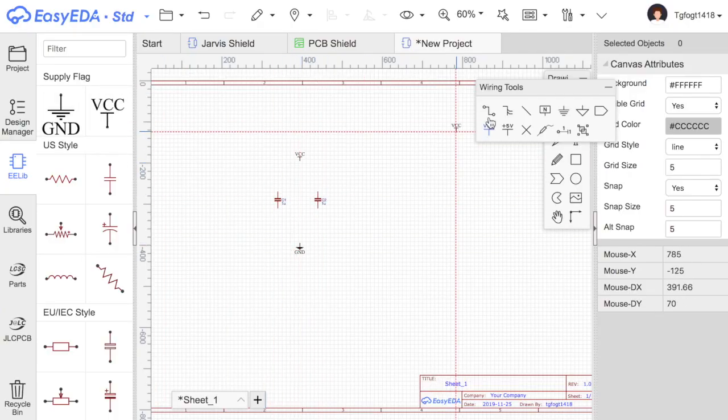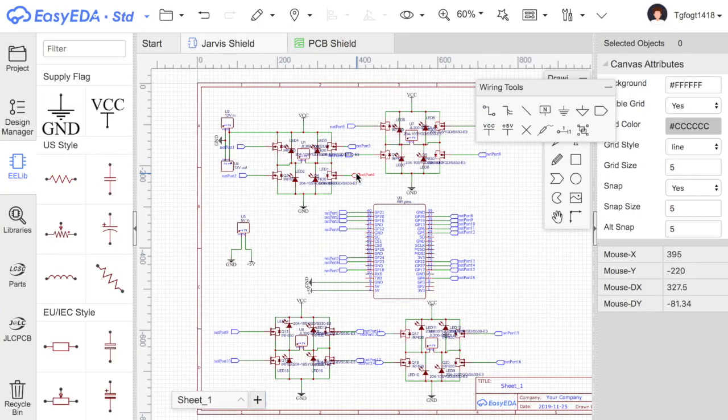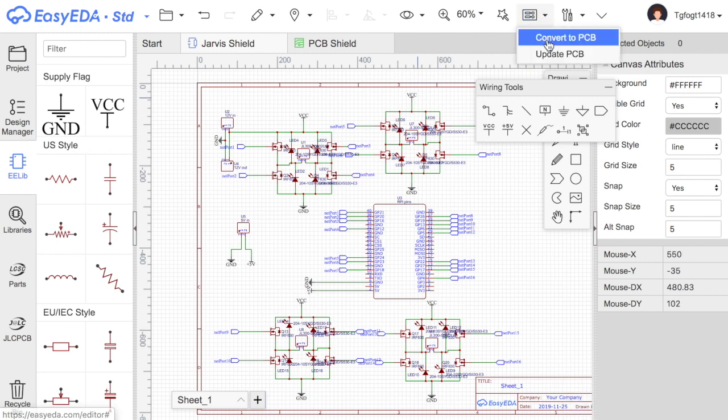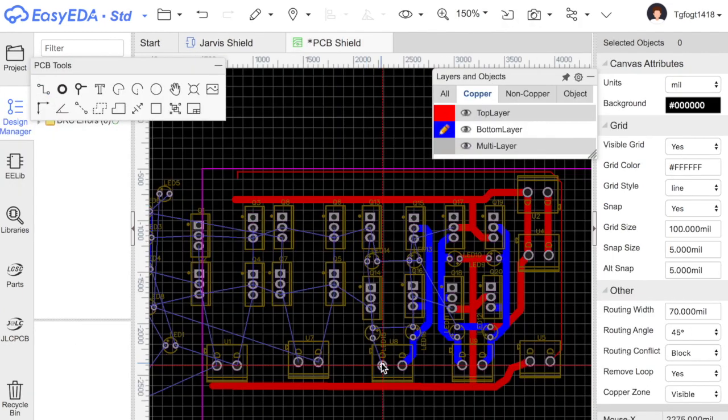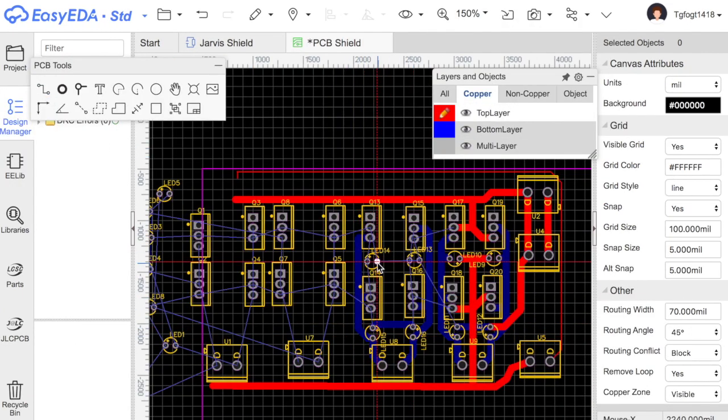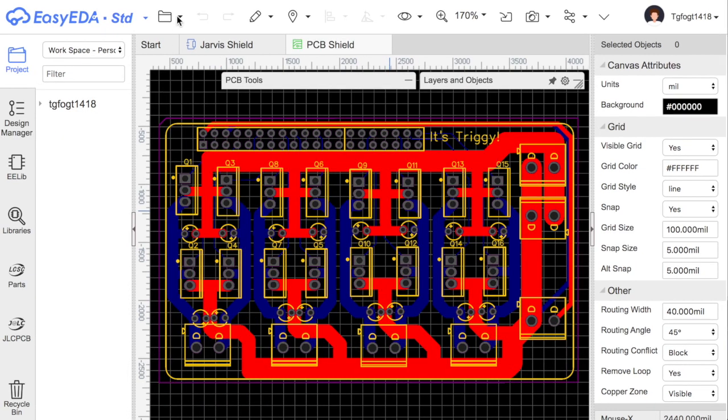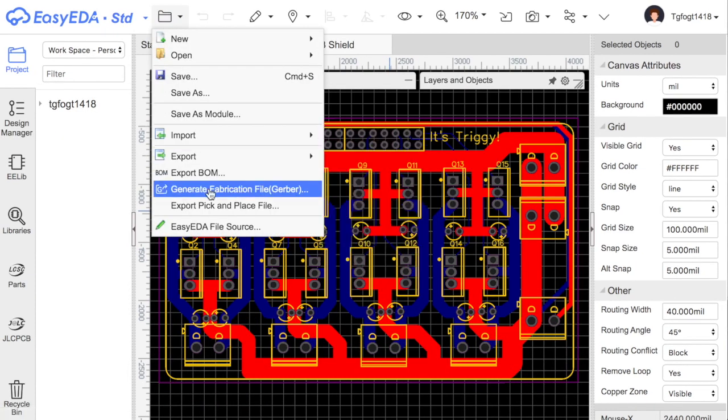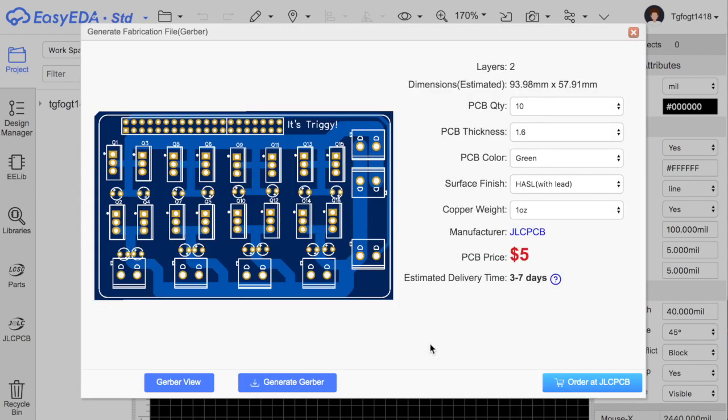We can put together a schematic using a website like EasyEDA, where we can select our components and attach them with wires like this. I went ahead and made four of those H-bridge motor controllers, as described earlier, and then have them connect to a Raspberry Pi. Now we can just go ahead and convert this schematic to a PCB, and we can start designing it, laying it out, and setting the traces to connect all the correct terminals. Once we're happy with our design, we can download the Gerber files and immediately purchase them from JLCPCB.